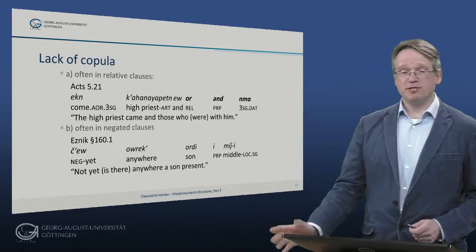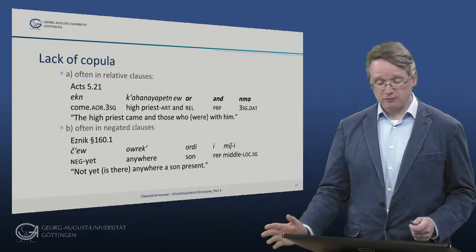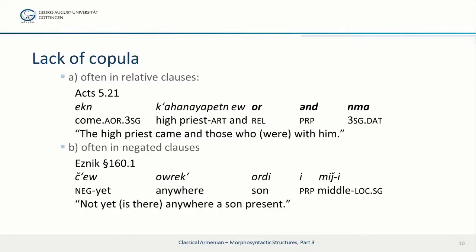Since 'em' is so frequent, it is interesting to note where it is omitted. This occurs in relative clauses frequently — for example from Acts of the Apostles: 'jeken kachaneja peten jev vor und nema' — those who were with him — where 'were' is absent from the sentence. And also in negated clauses we frequently find the lack of the copula, as in Eznik: 'cev urik vor di imici' — not yet is there anywhere a son present — simply a nominal clause.